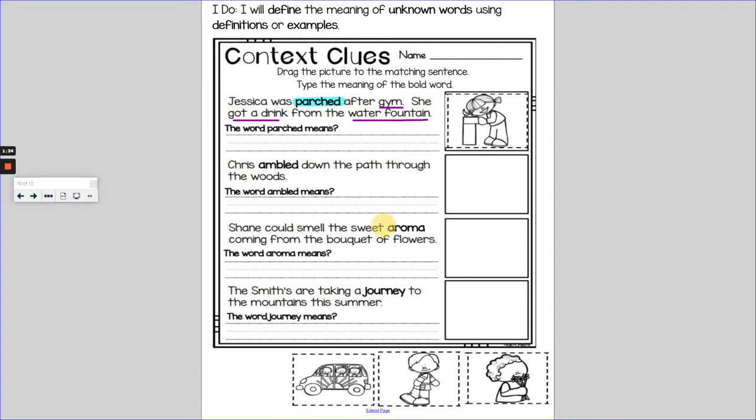And now I have to define the word. The word parched means thirsty, because she's thirsty. Let's fill it in and see if it works. Jessica was thirsty after gym. That works for me. Let's move to the next one.